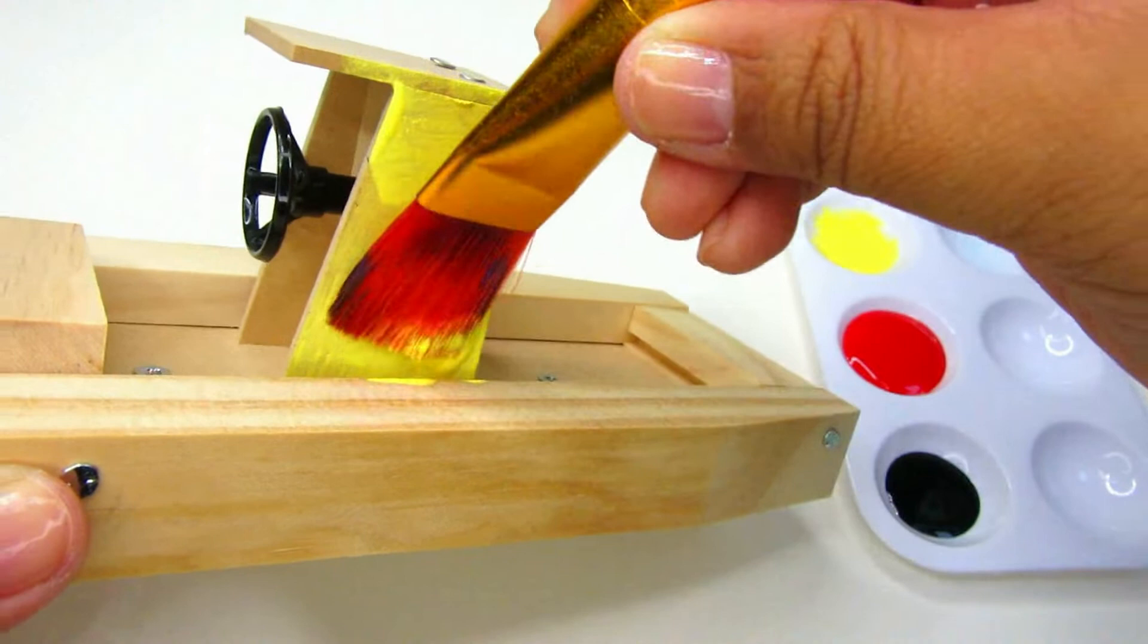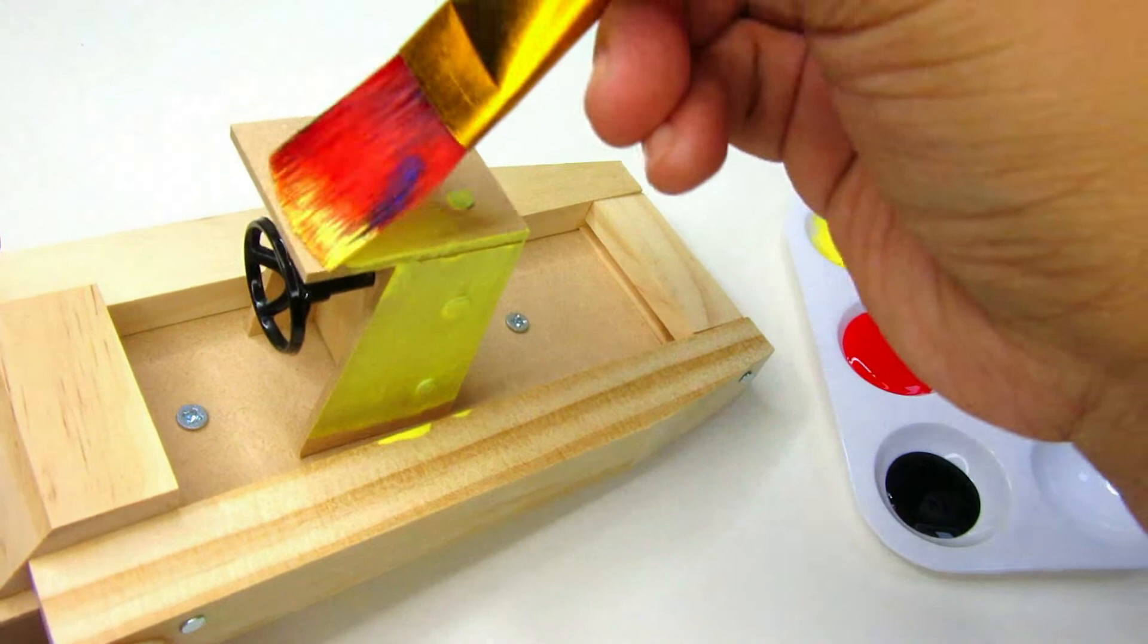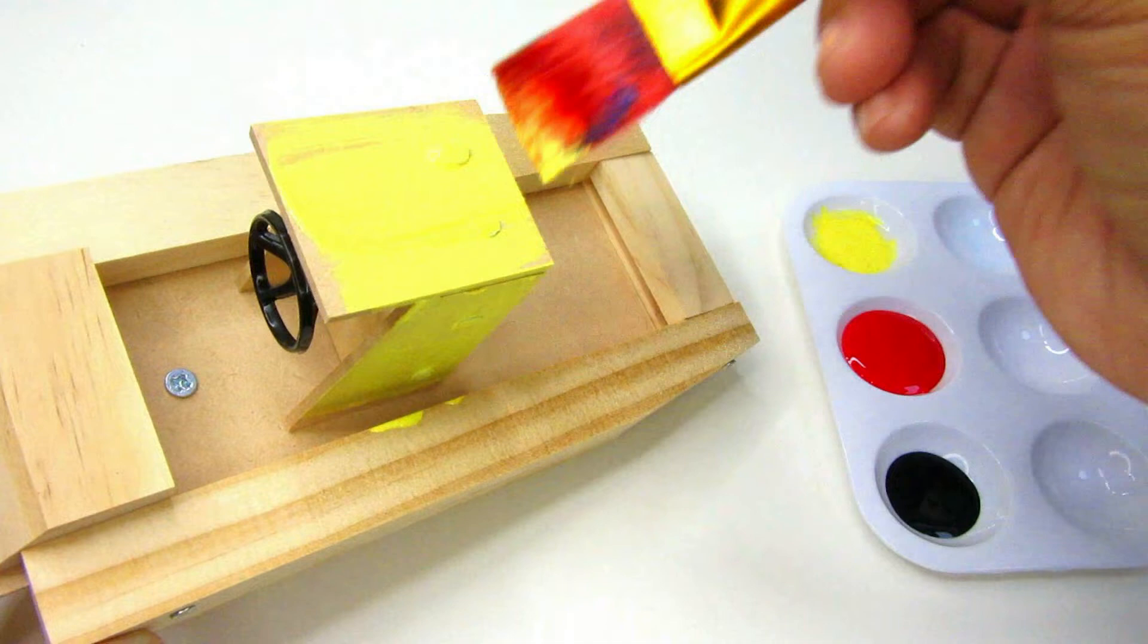Once we're done painting our fire boat with the colors yellow, red, and black, then we're gonna stick on some stickers.